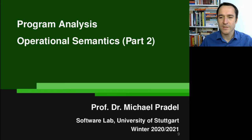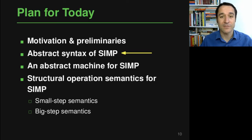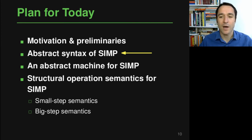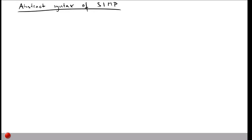Welcome back to part two of this lecture on operational semantics in the program analysis course. In this second part, we will define the abstract syntax of a language called SIMP, for Simple Imperative Language, which will be the basis for eventually defining the semantics of this language. SIMP is a toy language — not a real programming language — but a simple imperative language created to show how you can define the meaning of a language.